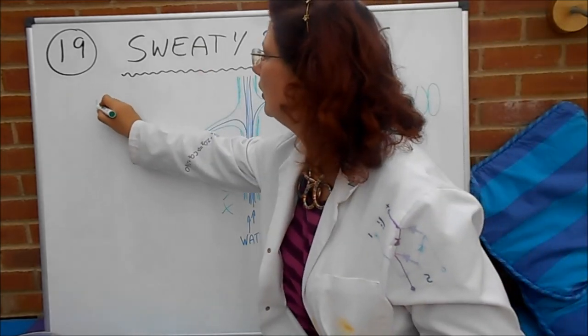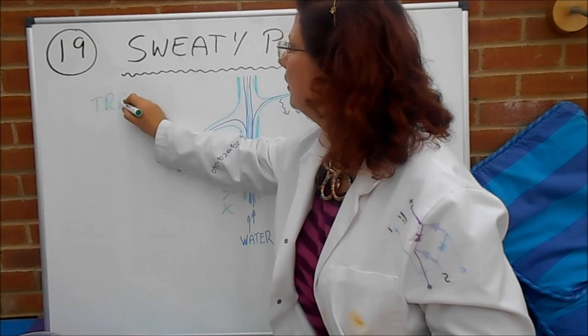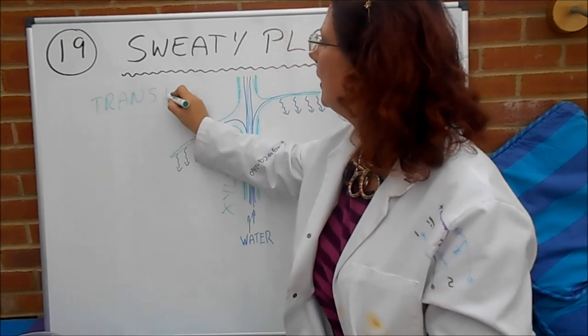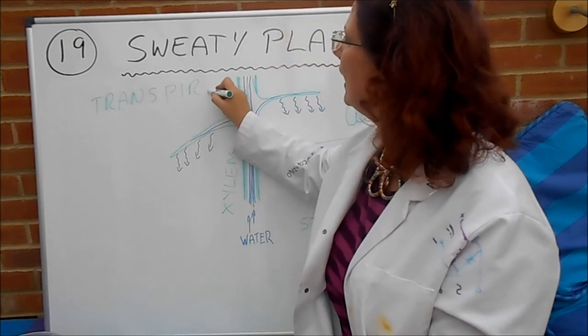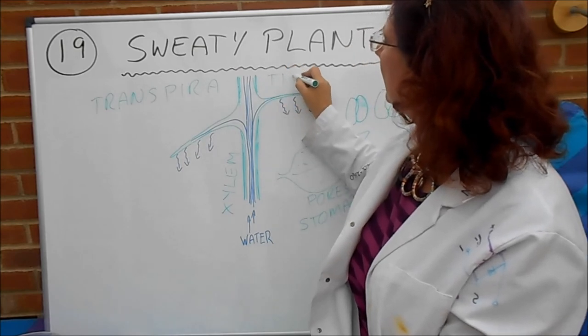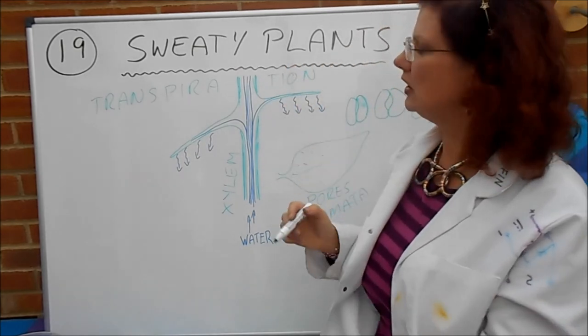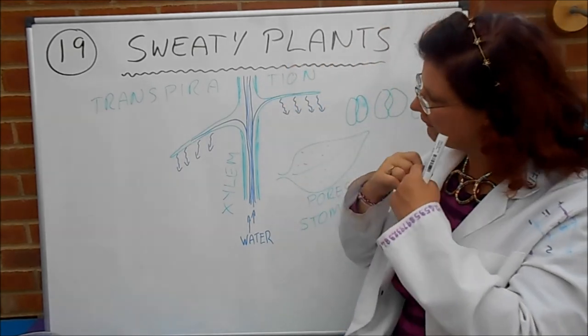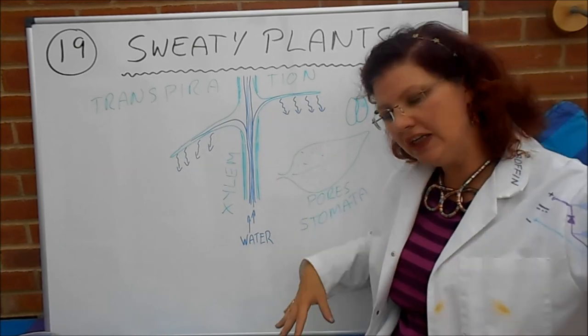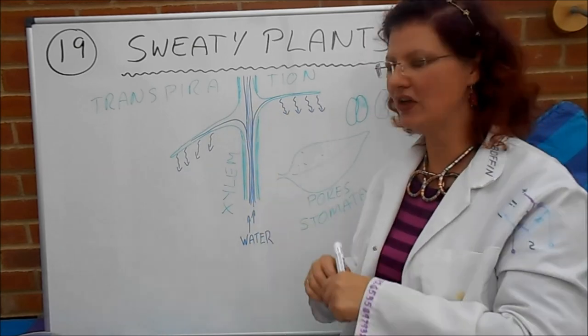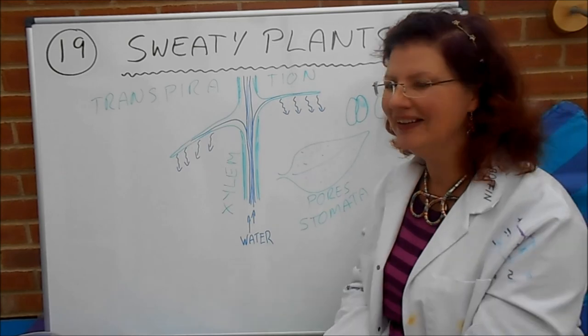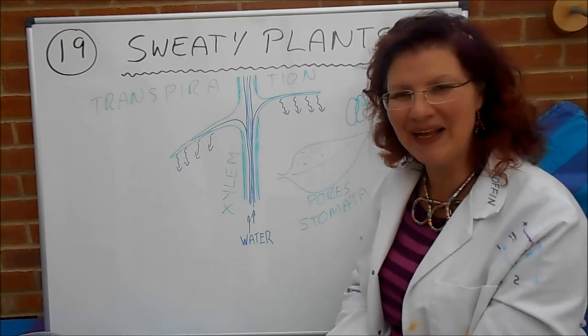I'll write that on the board. This is called transpiration. Transpiration. That is the evaporation of water through the stomata that leads to the drawing up of water through the Xylem tubes. Fab name. See you next time, Batty fans.